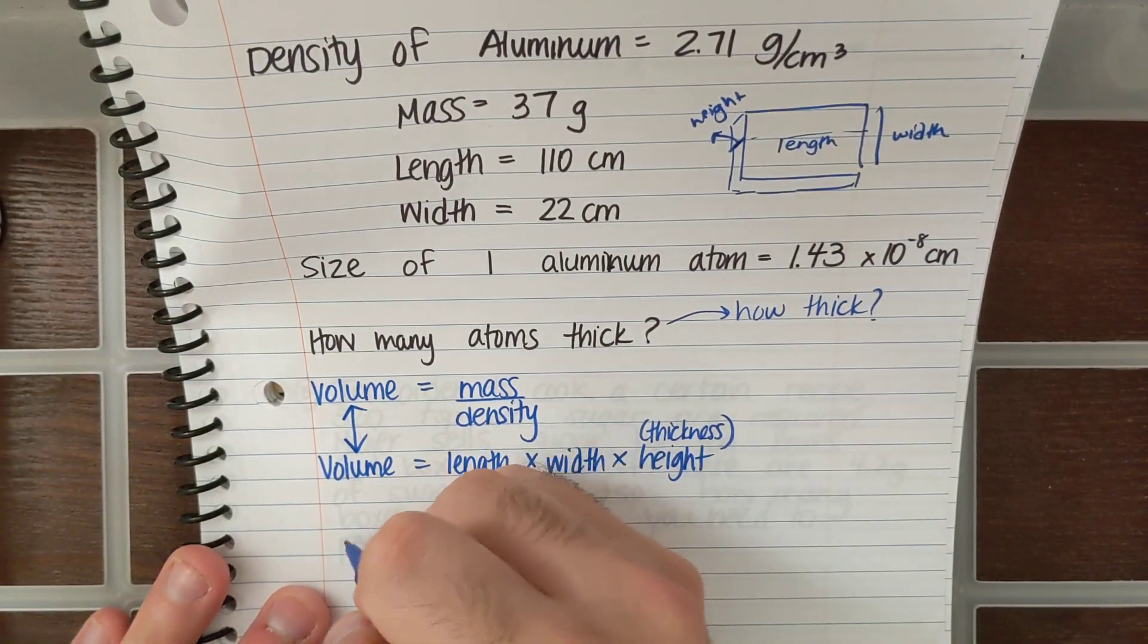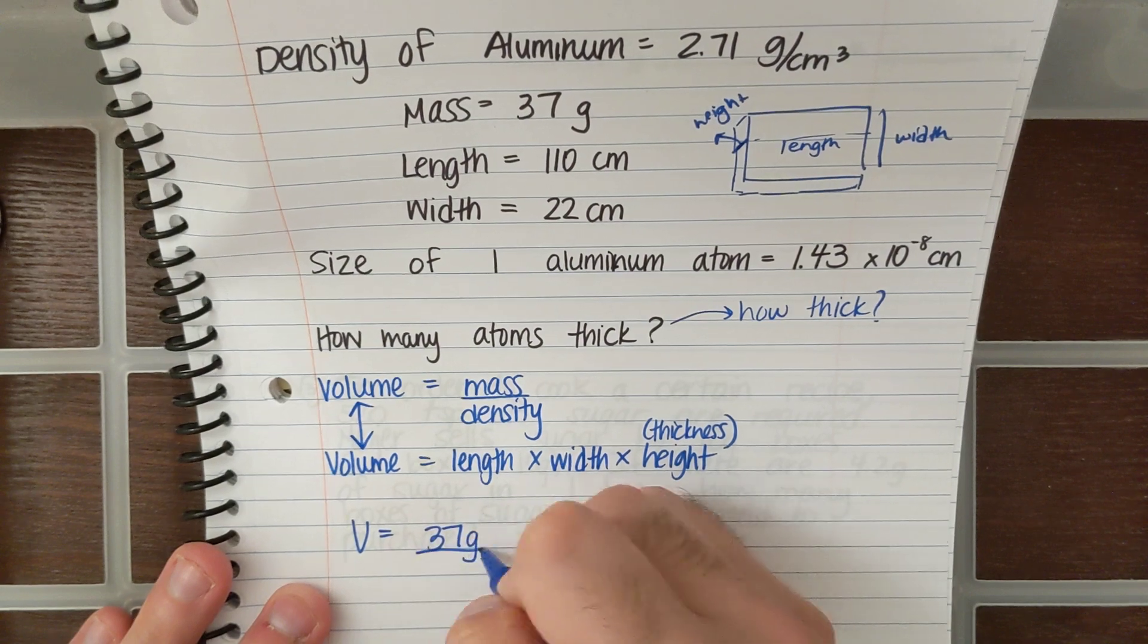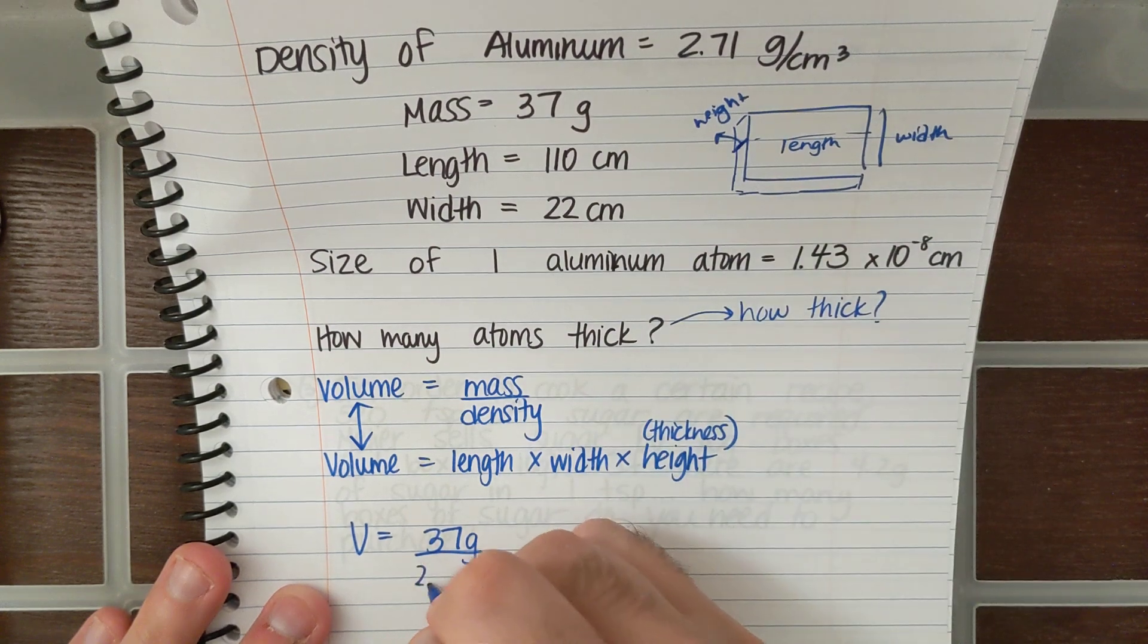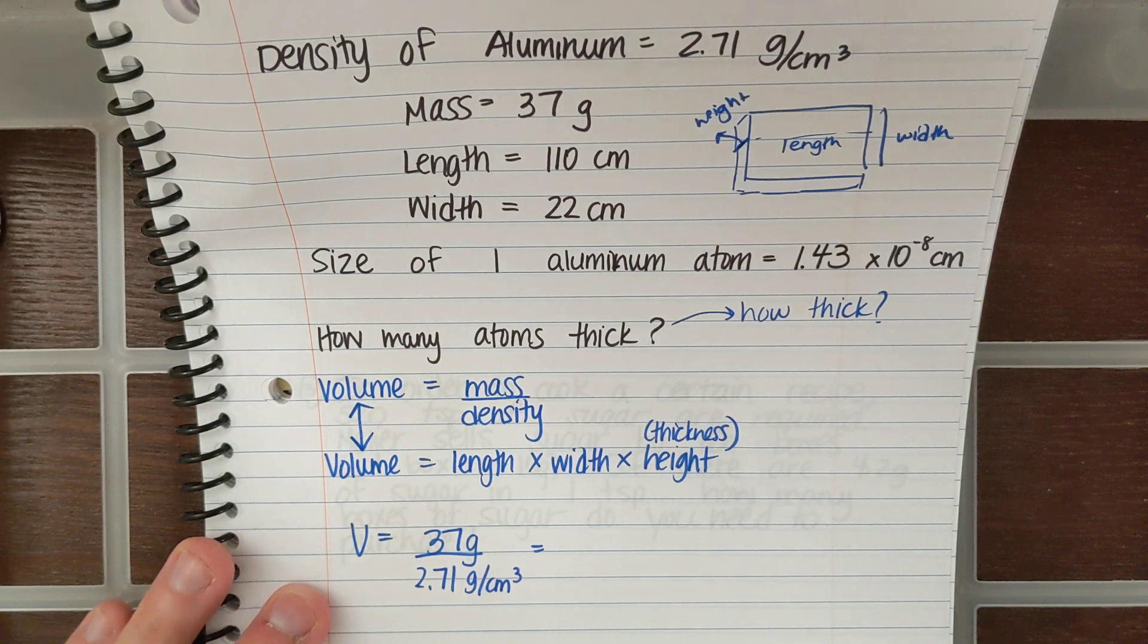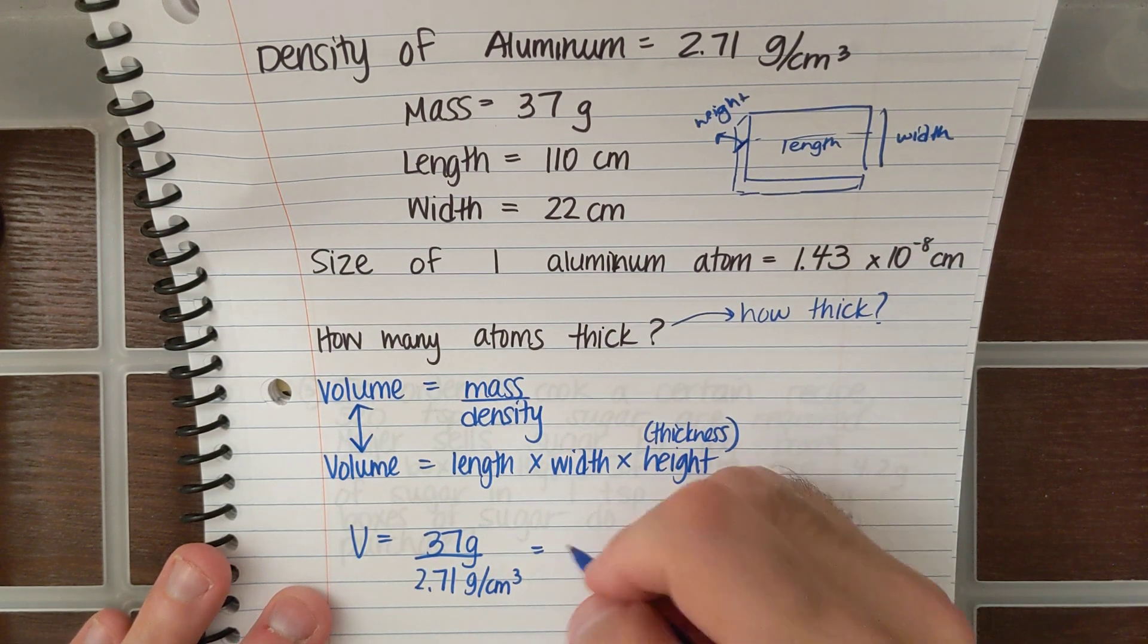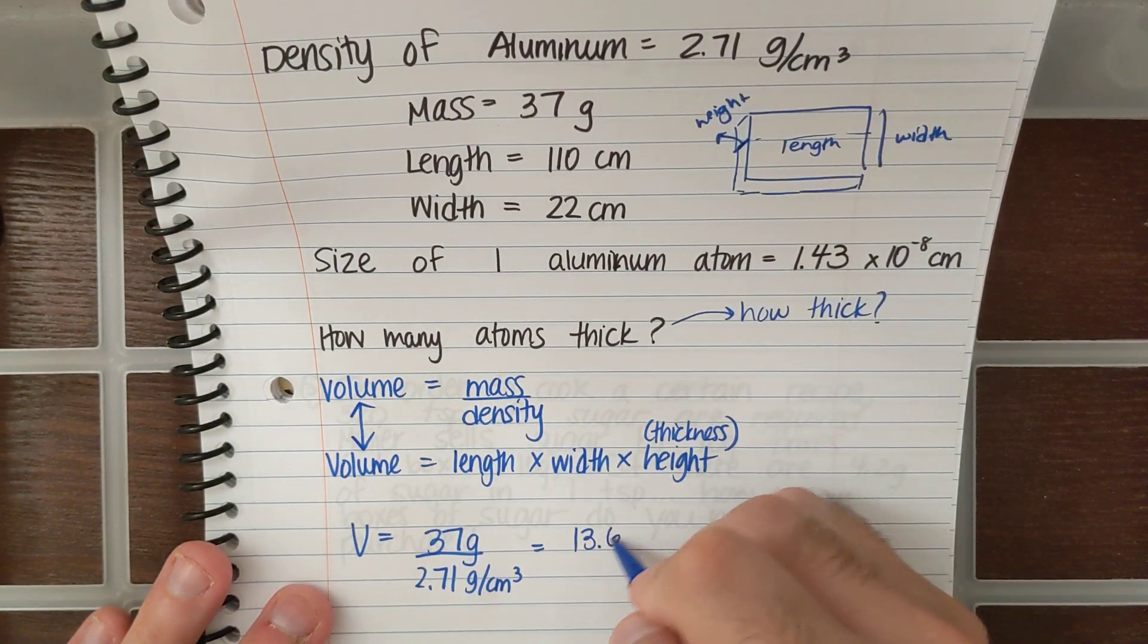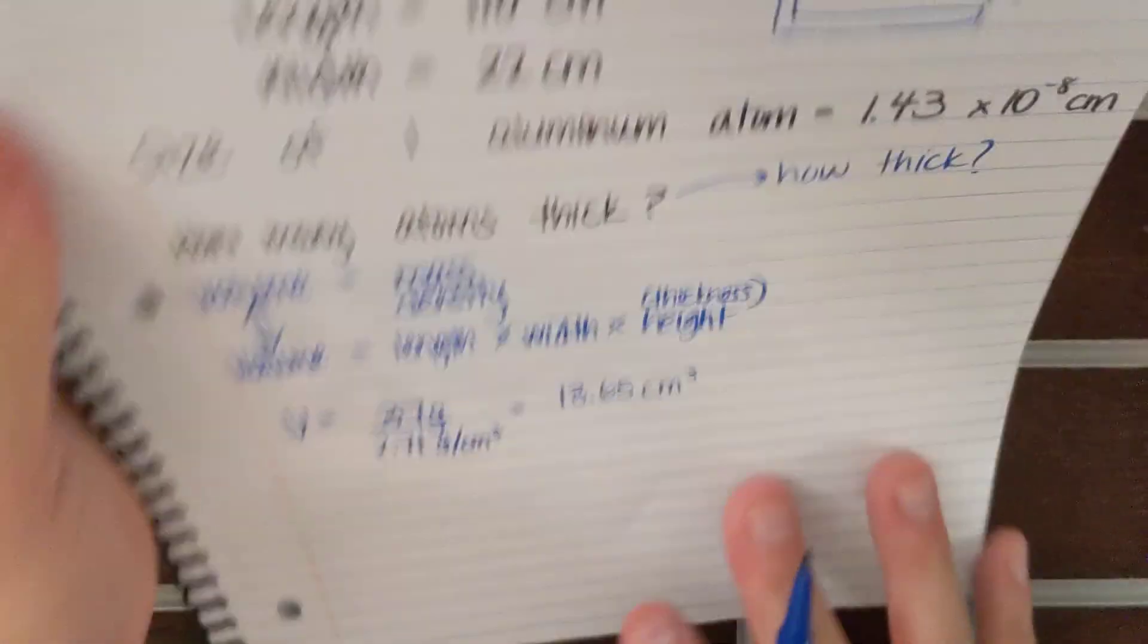So let's calculate our volume. Volume is going to be equal to mass, which is 37 grams, over the density, which is 2.71 grams per centimeters cubed. If I do that math, I get 37 divided by 2.71, I have 13.65 centimeters cubed. That's my volume.